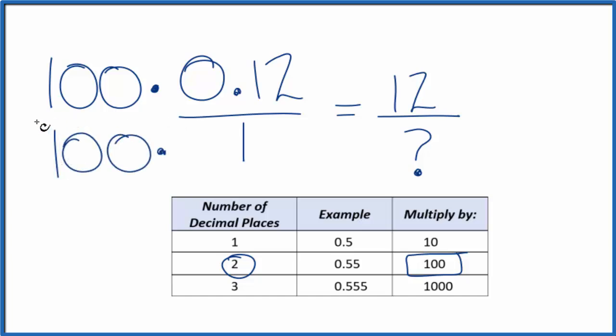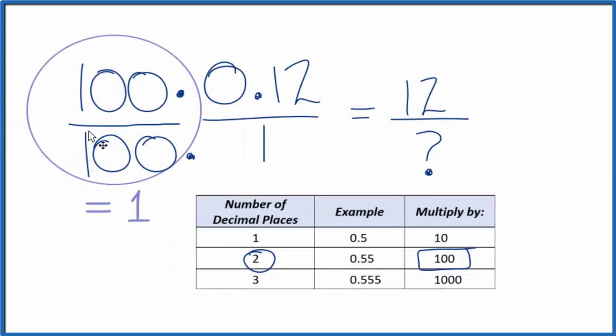You can think of this as 100 over 100, which equals 1. So we've not changed anything, we're just multiplying by 1. Now we have 100 times 1, that gives us 100. And now we have whole numbers, so we can simplify this fraction to convert 0.12 to a fraction.